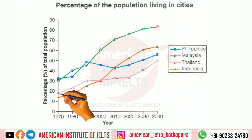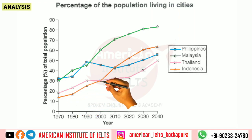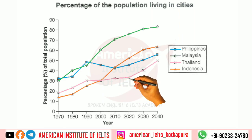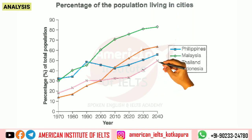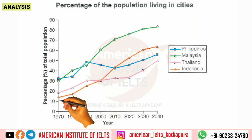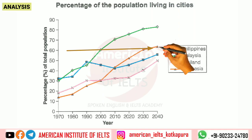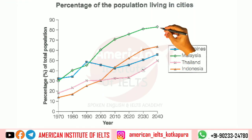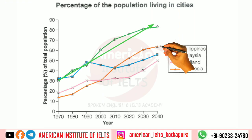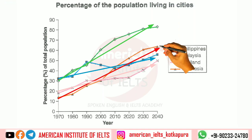For Thailand, initially less than 20 percent of the population lived in cities, and it gradually increased. Over the period of time there was a very marginal increase, and even with uniform growth between 2020 and 2040, they will have only around 50 percent of their population living in cities. For Indonesia, the trend was almost uniform — though they had the least number of people living in cities in 1970, by 2040 they will have more than 50 percent, specifically about 55 percent, living in cities. So to conclude, urbanization was highest in Malaysia, and while all countries saw increases in urban population over time, the other countries did not urbanize as rapidly.